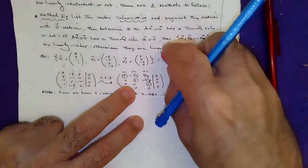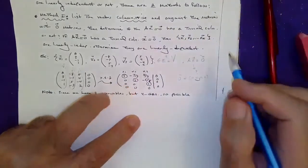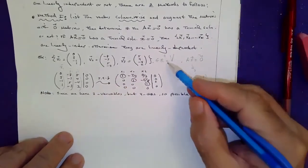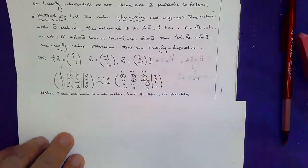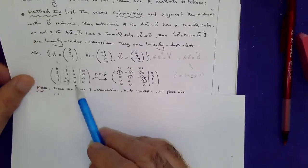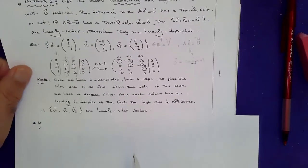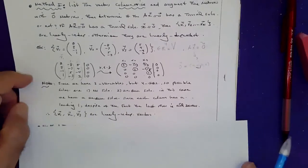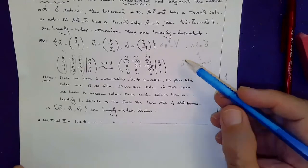This is supposed to be R4. Sorry, we are in four dimensions. The vector space is R4 because you've got four elements in each vector. Sorry about that. So what do you do? You put this in row echelon form and see if you have a solution or not.